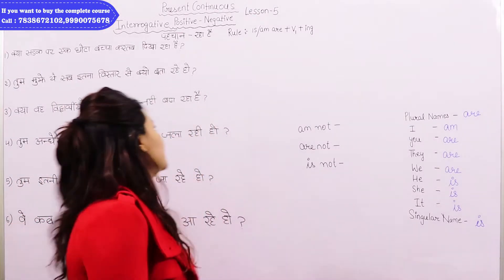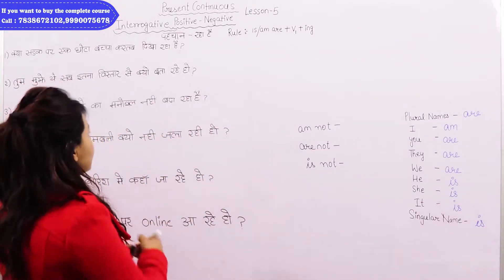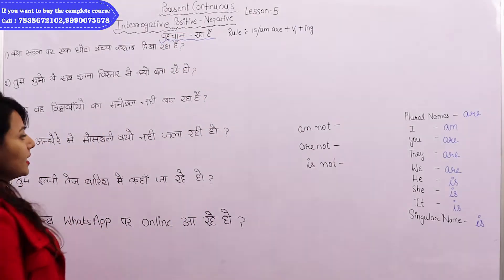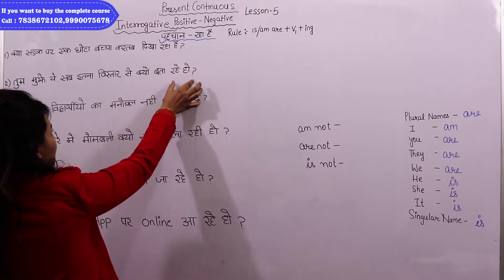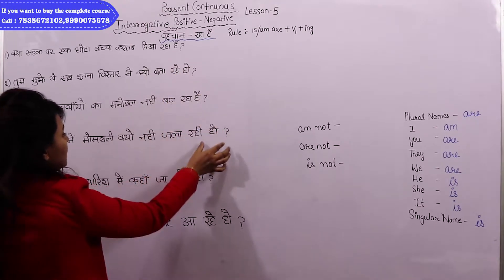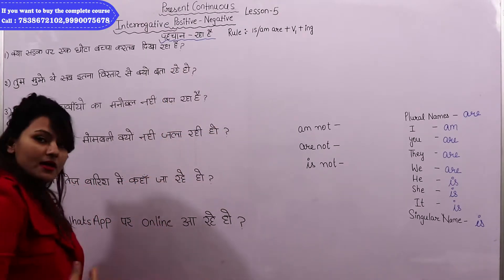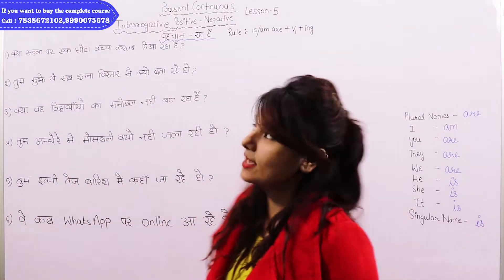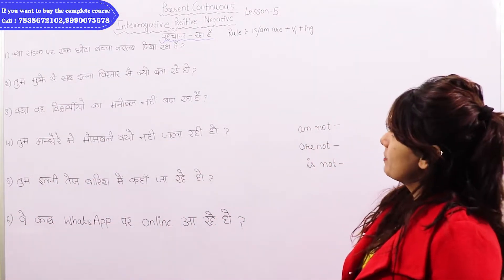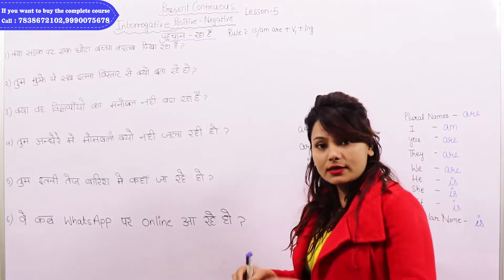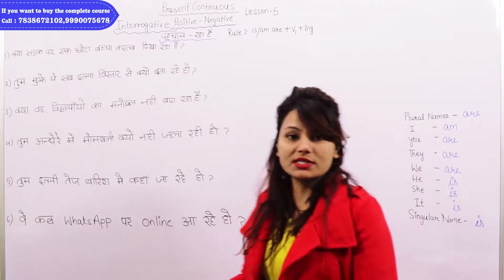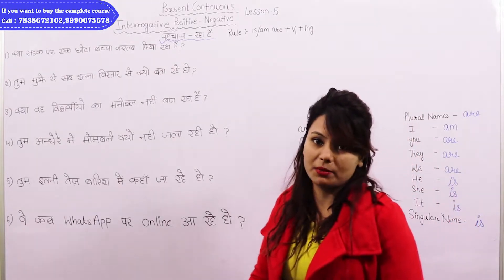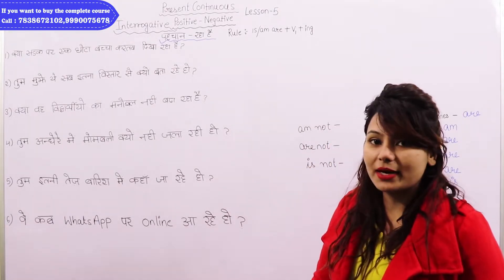...ing. Very simple. How to identify it — in any Hindi sentence, if at the end you see 'raha hai', 'rahi hai', 'rahe hai', then you understand it is present continuous. Present continuous tells us about something that is currently in progress, and also a little bit about the nearby future.